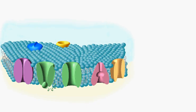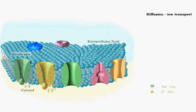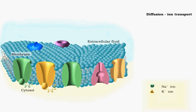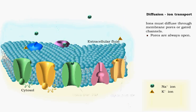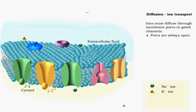Charged molecules, like ions, diffuse through the plasma membrane via membrane proteins. Leakage pores are always open.